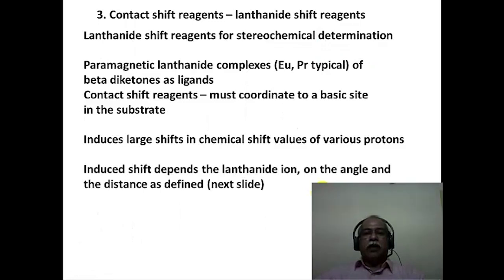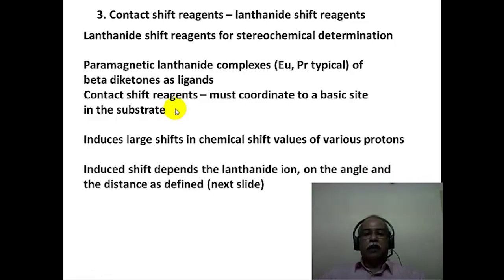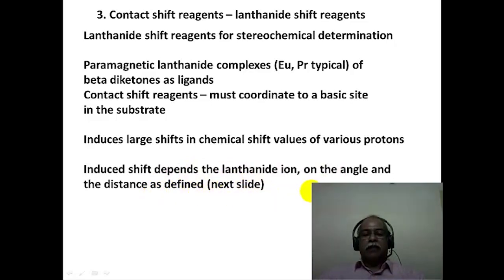The third technique uses contact shift reagents, otherwise known as lanthanide shift reagents. These are paramagnetic lanthanide complexes with beta-diketonate ligands, and they must coordinate to a basic site in the substrate — an oxygen, nitrogen, or sulfur lone pair. They form a weak complex with the substrate and induce large chemical shift changes. The induced shift depends on the lanthanide concentration, the angle theta, and the distance r as defined by the McConnell relationship.